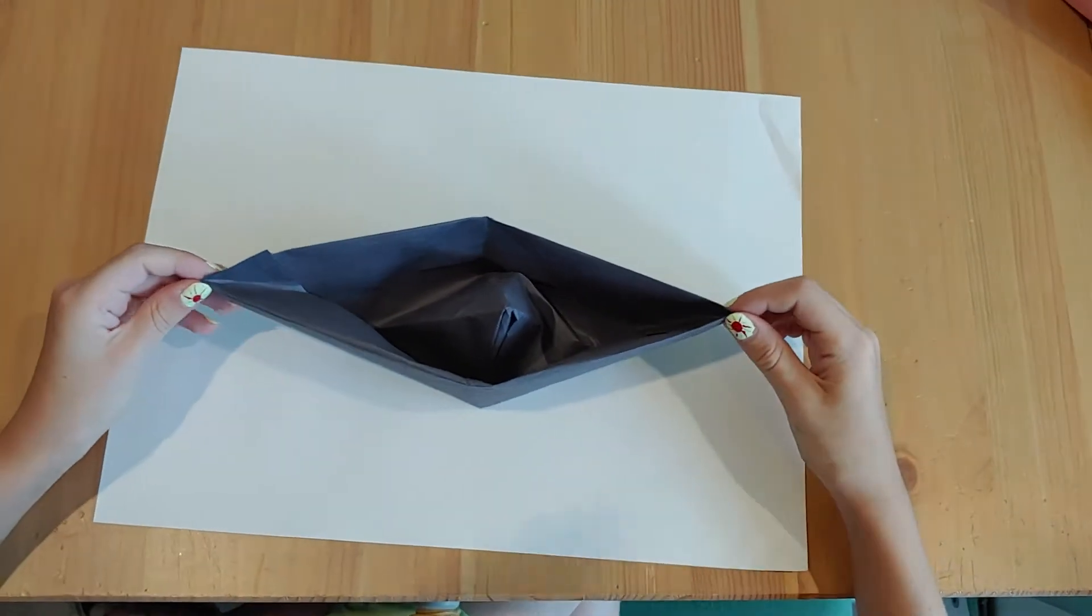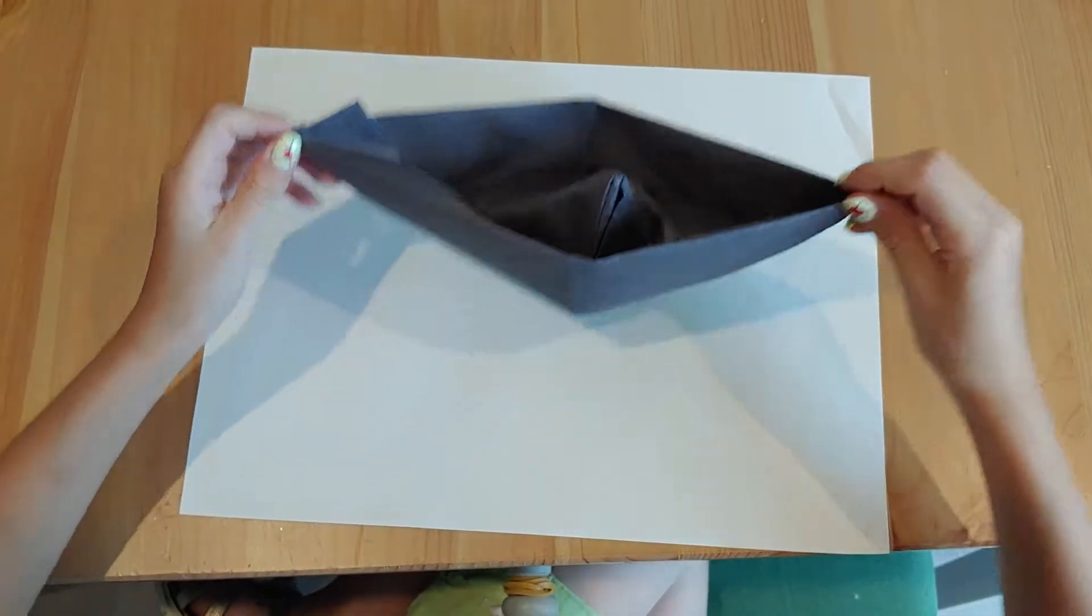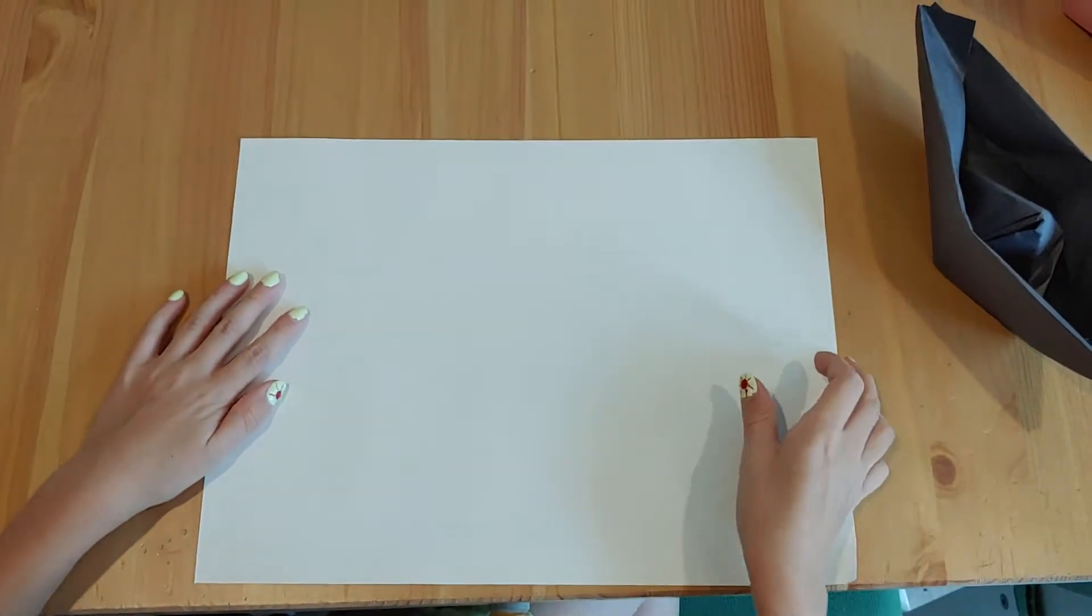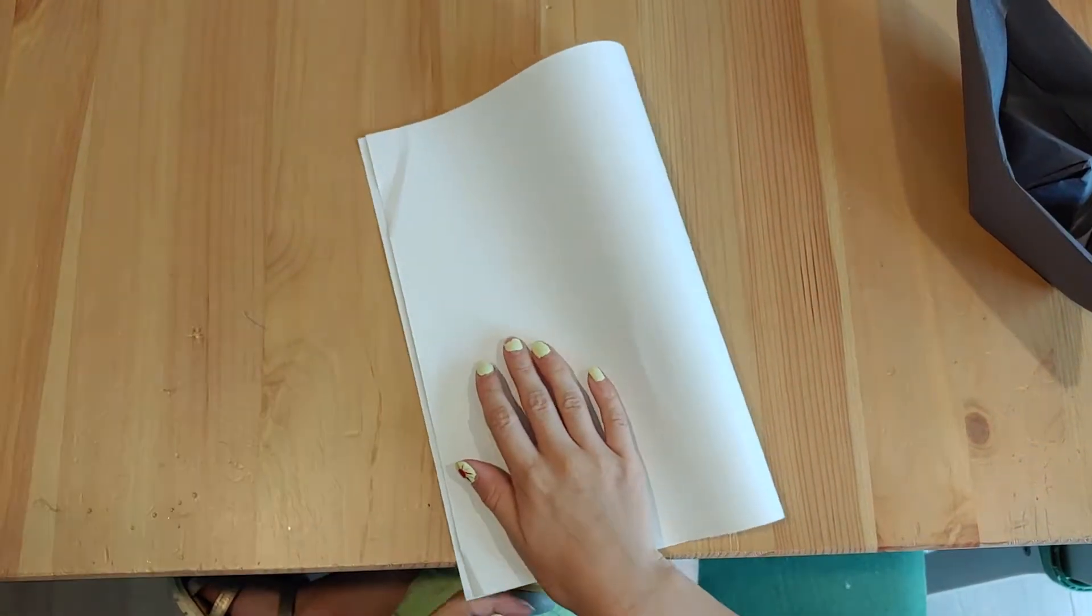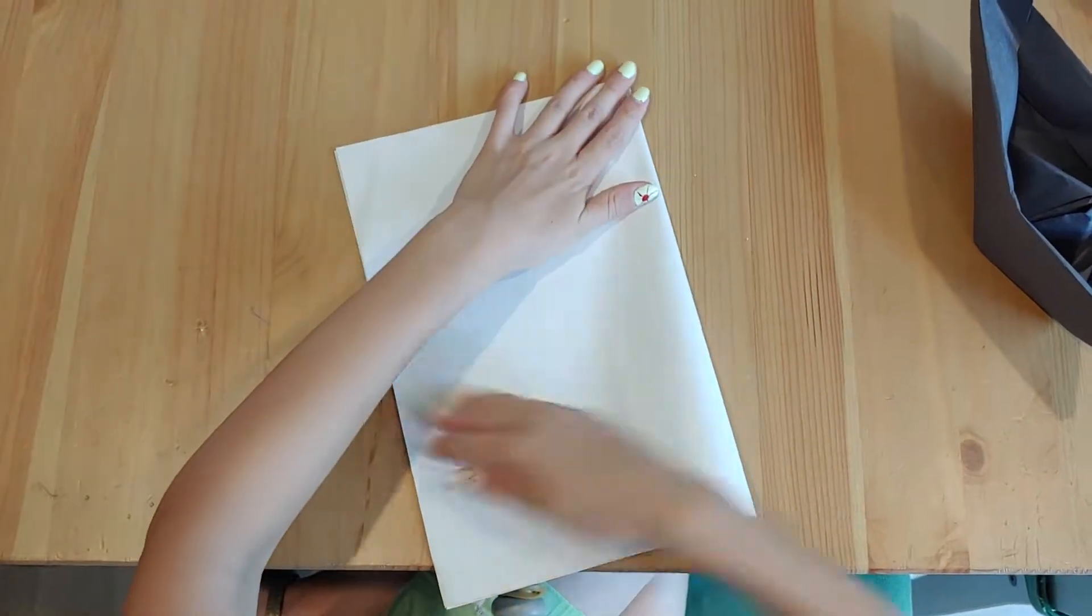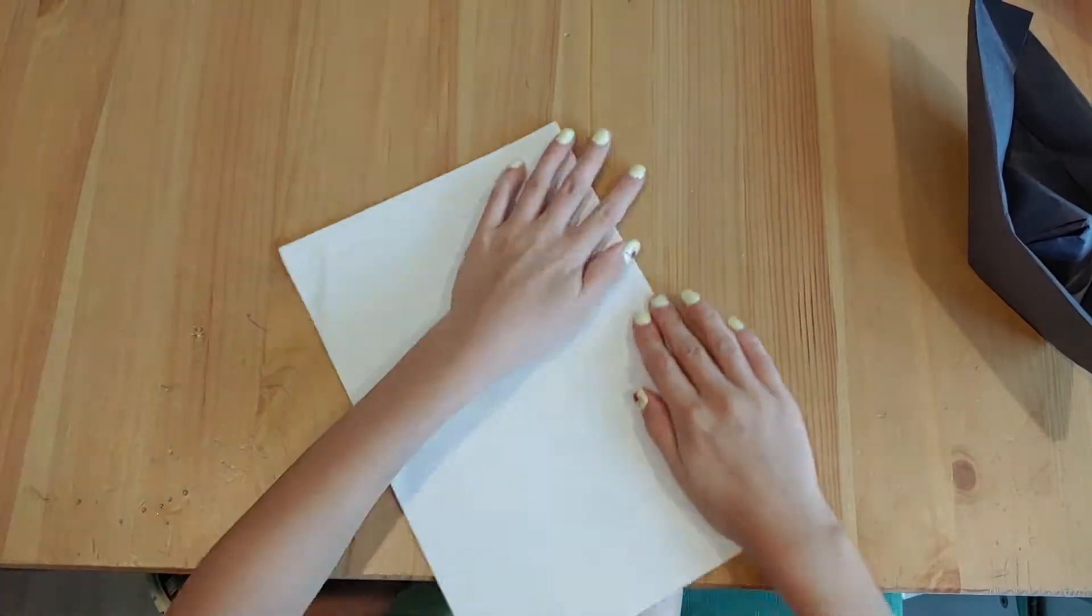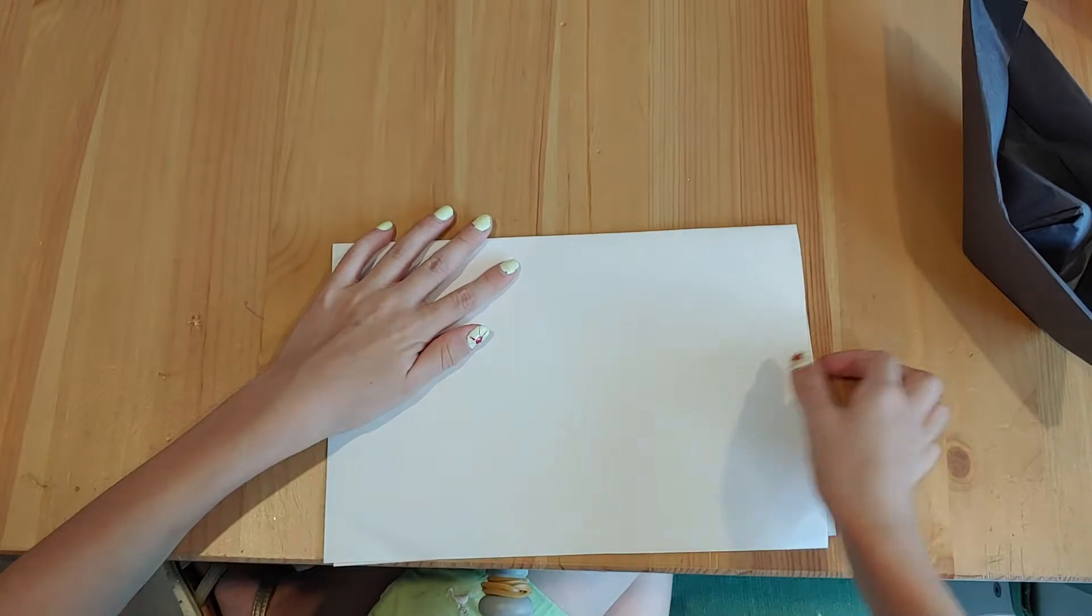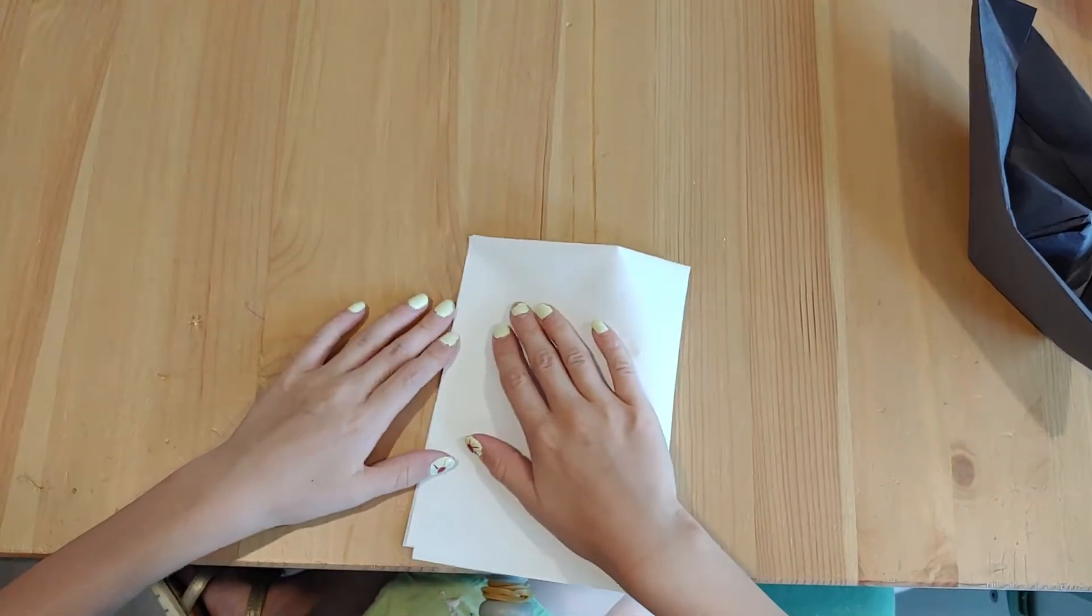Hi, today I'll be showing you how to make a paper boat. This is how it will look like. So you get a paper, then you fold it like a card. Then you turn it like this.